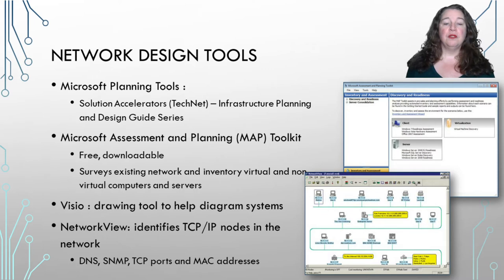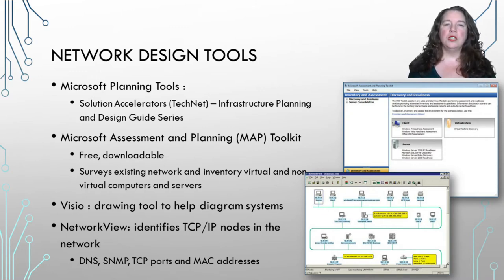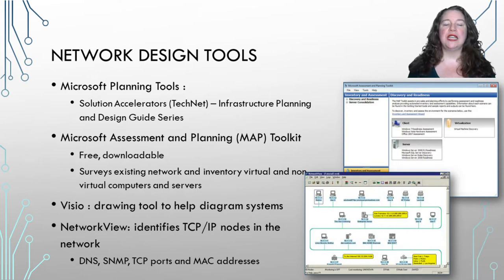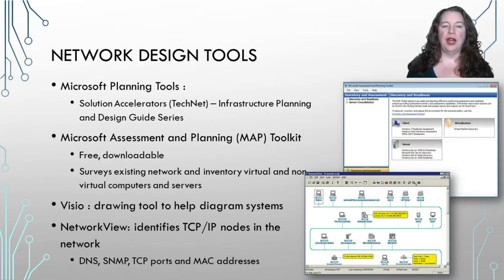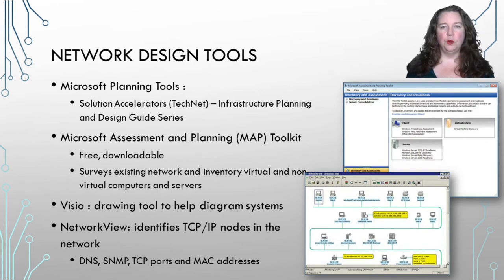You can then use that to help you break down what you need to do. Visio is a Microsoft product used for graphing, charting, and flow charting with visual tools — it can be really useful to help you draw out your network. Network View is designed to identify your TCP/IP nodes, your DNS, SNMP, TCP ports, and all MAC addresses. It helps you design the logical view of your network — not the physical. It doesn't tell you where devices are in the building, but it does show how they are logically connected.